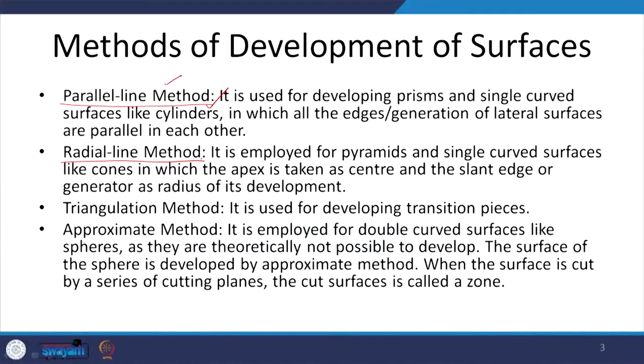A cone is a little complicated, but if we have a pyramid — say a pentagonal pyramid — and we move on to the next triangular surface, the distance of each surface from the apex is the same. Instead of infinite lines as in a circular cone, we get some defined lines and surfaces depending upon the base of the pyramid. With this radial line method, we can develop the surfaces for pyramids and circular cones.